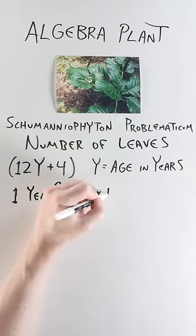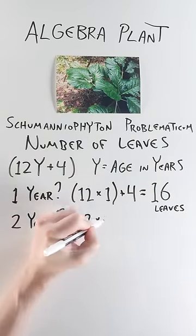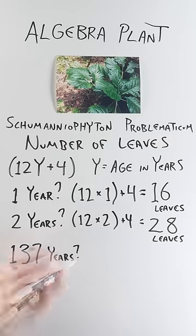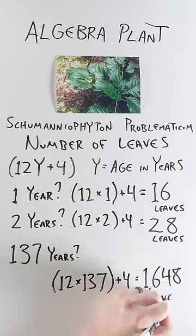One year? 12 times 1 plus 4 equals 16 leaves. Two years? 12 times 2 plus 4 equals 28 leaves. 137 years? 12 times 137 plus 4 equals 1,648 leaves.